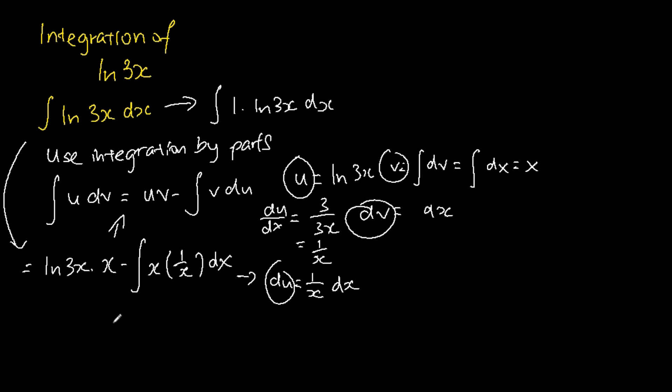And we know that x times 1 over x gives us 1. So we have x times ln 3x, subtracting away the integral of 1 dx.